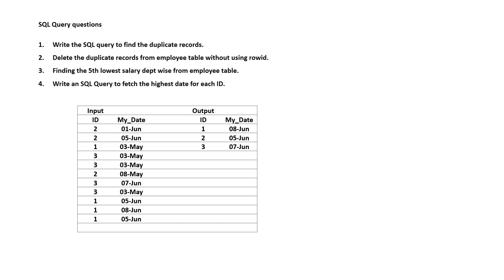Now moving to SQL practice questions. In this part we covered theoretical questions and answers; in the second part we will cover SQL queries. For your exercise, try to answer these four SQL query questions: first, write a query to find duplicate records; second, delete duplicate records from the employee table without using ROWID; third, find the fifth lowest salary department-wise from the employee table; and fourth, given a table, fetch the highest date for each ID. You can cross-check your answers in the next session. Thank you for watching.